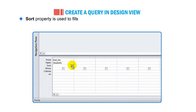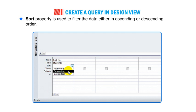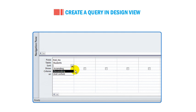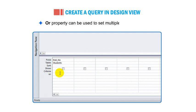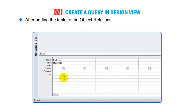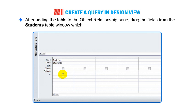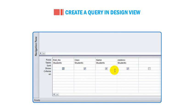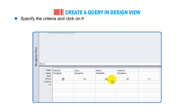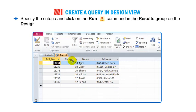The Sort property is used to filter data either in ascending or descending order — it is optional. The Criteria property contains the condition used to filter records for the query output. The Or property can be used to set multiple criteria in a query. After adding the table to the object relationship pane, drag the fields from the Students table window which you want to display in the query design grid. Then specify the criteria and click the Run command in the Results group on the Design tab.